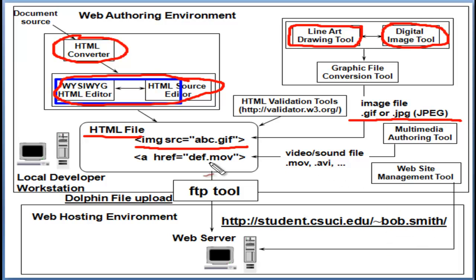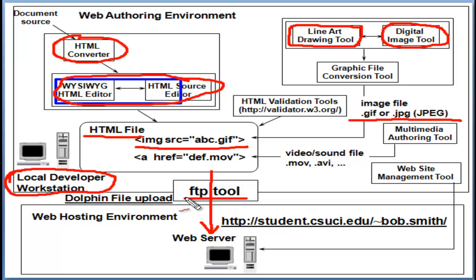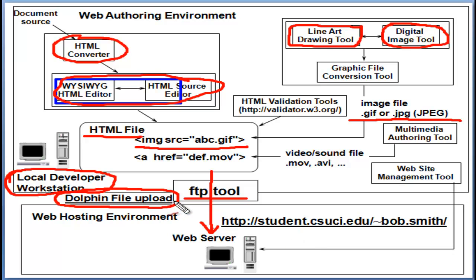You can also incorporate multimedia content. You can create your web page and test it locally using a browser. However, in order to host your web pages on a web server for the whole world to see, you can use an FTP tool to transfer your files from a local machine to a web server. FTP stands for File Transfer Protocol. At CSU Channel Islands, you can also use Dolphin file manager to upload your document. There is a separate video demo explaining how to do this. Once you upload your file to your student web space, this is how you access it.